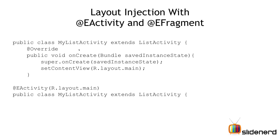Without using Android Annotations, you would have MyListActivity extending ListActivity and doing the regular stuff. But if you're using it, you can simply say @EActivity, which is the annotation, and pass the layout ID which is R.layout.main — that's it. You don't have to write an onCreate method, you don't have to call setContentView or anything of that sort. You can see how much this is going to simplify your work.